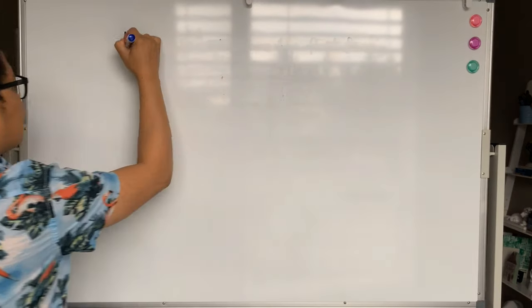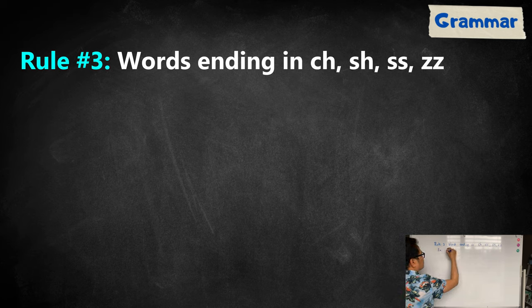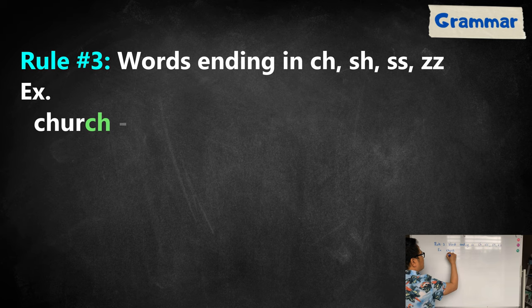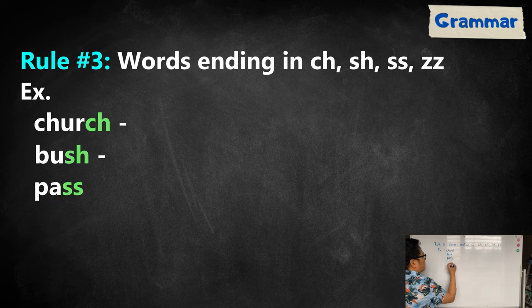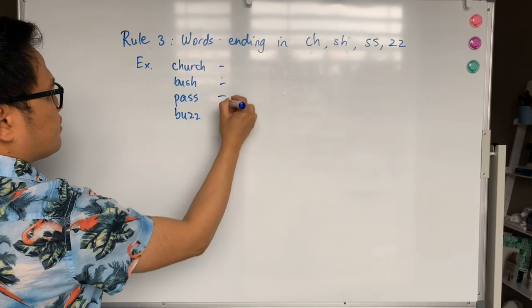Rule number three is for words ending in S-H, C-H, double S, and double Z. For example, church for C-H, bush for S-H, pass for double S, buzz for double Z. To make these words plural, you have to consider this.